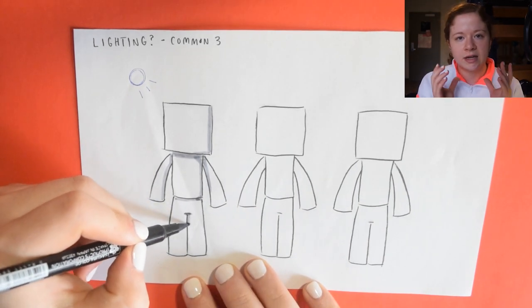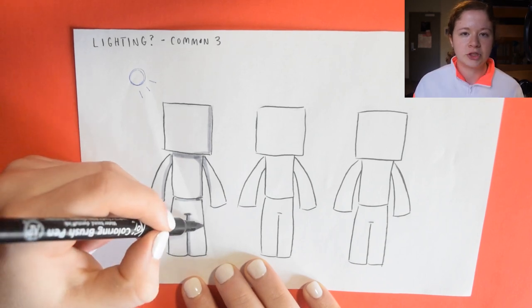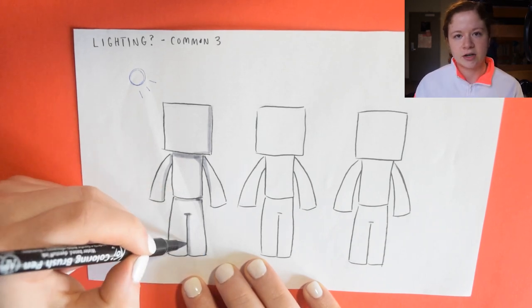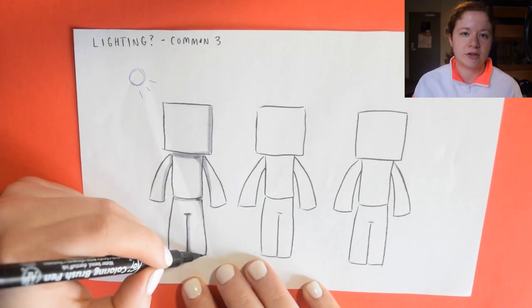Since his head creates an overhang over his chest, that means the light is not going to hit right under his neck, thus creating a shadow.